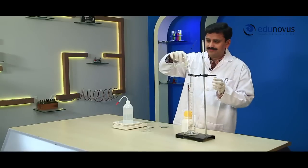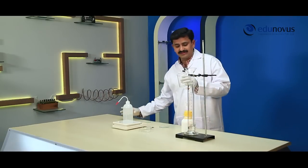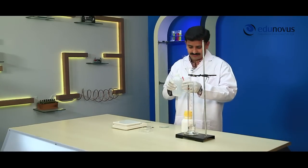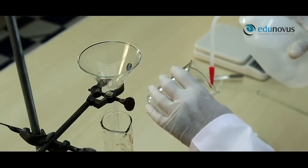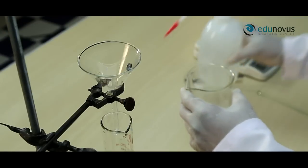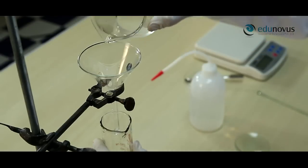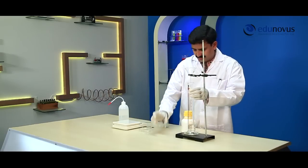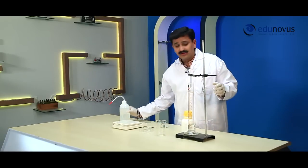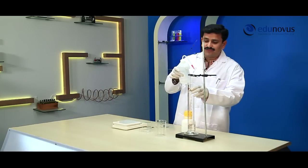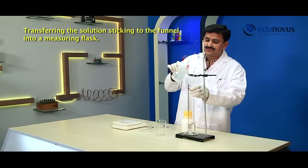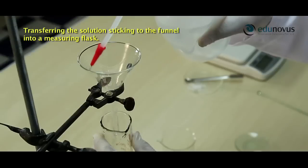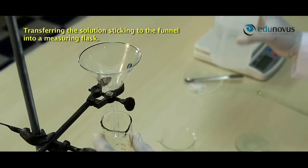After that, wash the beaker with distilled water and transfer these washings into the measuring flask. And also wash the funnel with distilled water so that the solution stuck to the funnel must be transferred into the measuring flask.